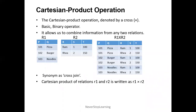Cartesian product is a basic binary operator. We have discussed all basic operators of relational algebra in our first video lecture. It is a binary operator because it works on two tables at a time. It is a basic or functionally independent operator because the work it does cannot be done by any other operator, and it has the ability to derive a query by itself. It allows us to combine information from any two relations.